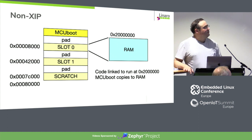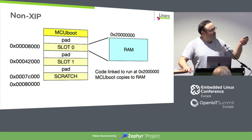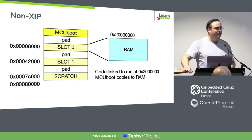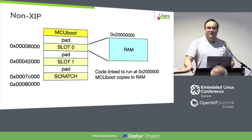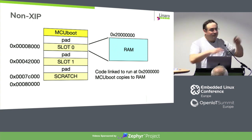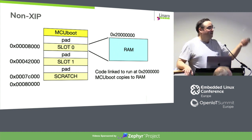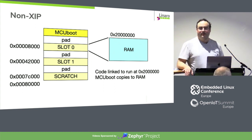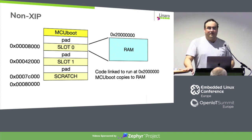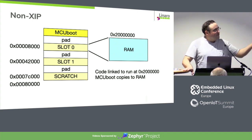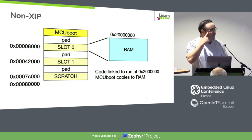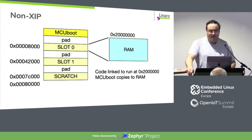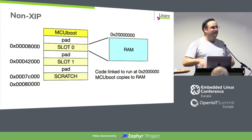Going back to the simple version: the code is linked to run at the RAM address. This means we don't have to do any of the swap stuff — non-execute-in-place is actually a whole lot easier. The bootloader's job is not to swap things around in flash, but just to decide which slot is correct and copy that code into RAM. Interestingly, it also means the flash layout doesn't have to be fixed — it could be a file system, like a FAT file system or another kind.